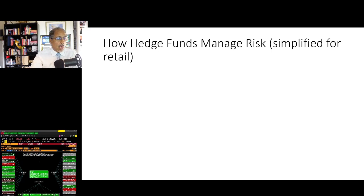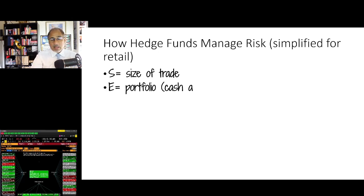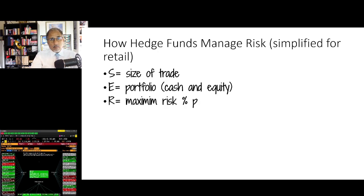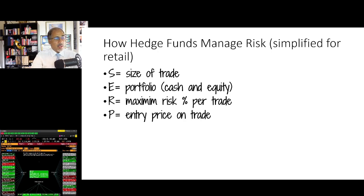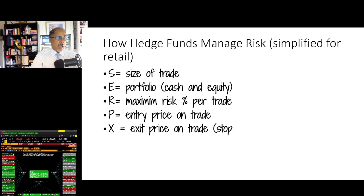I've simplified this for retail. Imagine S is the size of trade. E is your portfolio — cash and equity. R is the maximum risk percentage per trade, and we'll get to that number in a second. P is the entry price on trade, and X is the exit price on trade, or your stop loss.